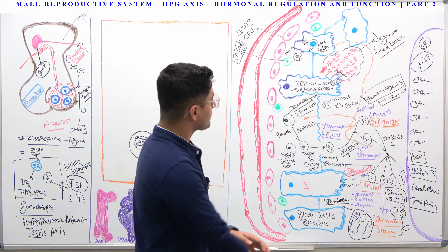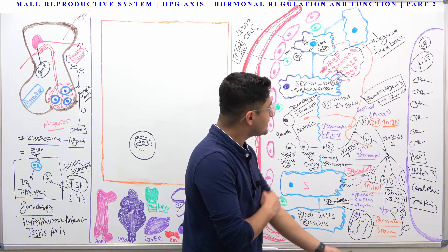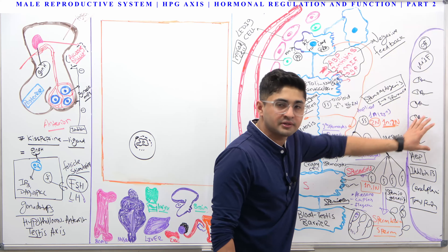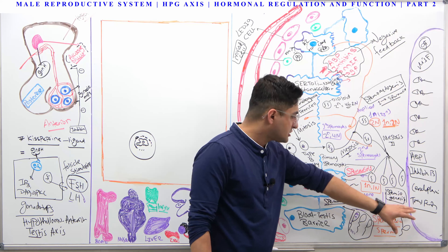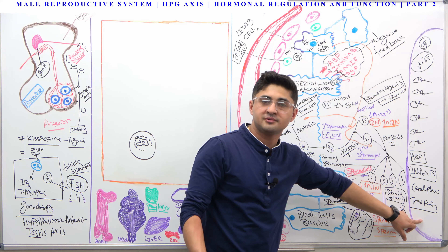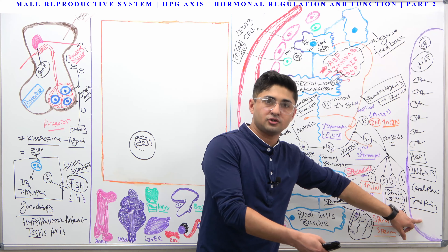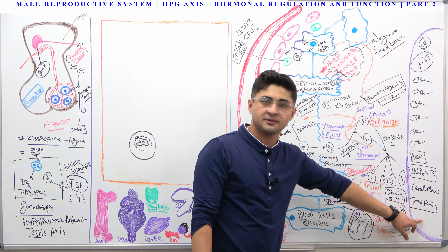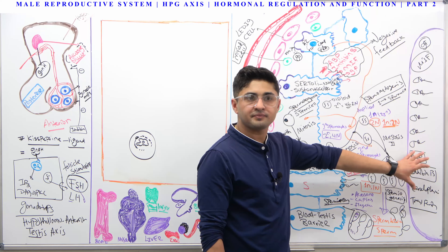Now we also have to talk about how the sperm is maintained in the testosterone — sorry, in the lumen — and how it gets to other areas. From the seminiferous tubules it goes to the epididymis; from the epididymis it goes to the vas deferens; from the vas deferens it goes to the ejaculatory duct, then the urethra, and then it comes out of your system.